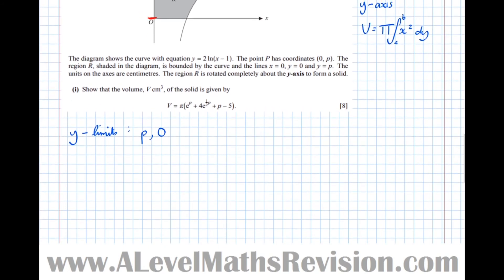So now we've got the volume equals pi times the integral between p and 0 of x squared dy. But we don't have what x equals, we're told what y equals in terms of x. So we're going to need to rearrange this to say x equals, so we can sub it in there. So let's do that now. We've got y equals 2 log of x minus 1, which means that half y equals log of x minus 1. Which means that if we're e both sides now, e to the half y equals x minus 1, which in turn means x equals 1 plus e to the half y.